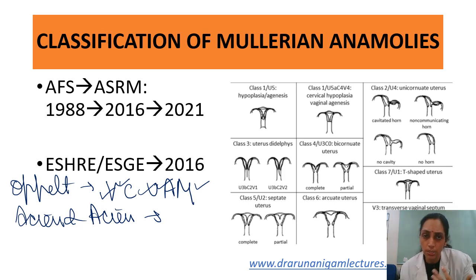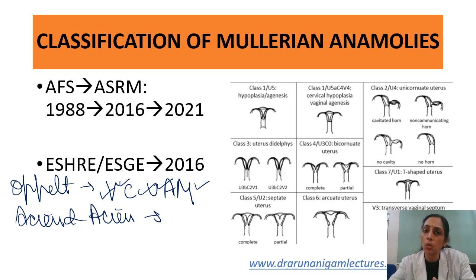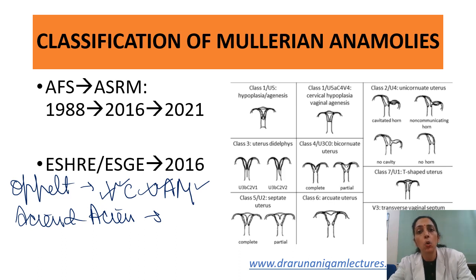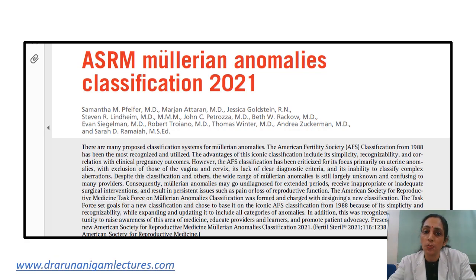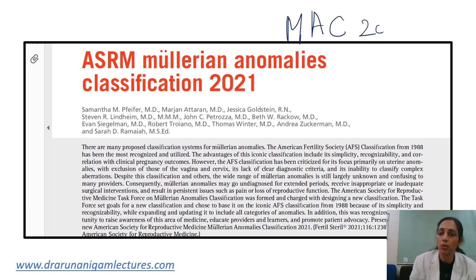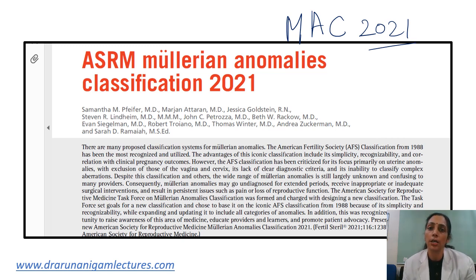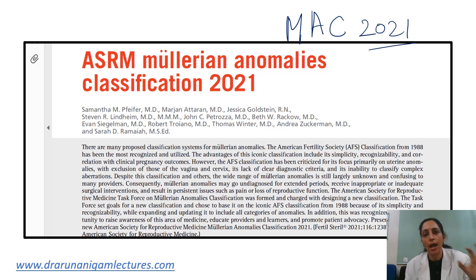ASRM thought they had to come back and look at a classification that can be generalized and used by everyone. They made a task force that involved not only gynecologists but also pediatricians and surgeons, so the opinion of all disciplines could be taken. That is why this classification was given as the ASRM Mullerian Anomaly Classification — MAC 2021 — published in Fertility and Sterility Journal in November 2021. They said the AFS classification from 1988 is the most recognized and utilized, and that has been used as the base.